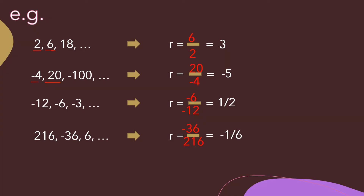For the sequence 1 over 9, 1 over 3, then 1, it doesn't matter what kind of numbers we are dealing with — we just follow the same steps. Using the second term 1 over 3 divided by the first term 1 over 9, and dividing these two fractions properly, the common ratio is 3.